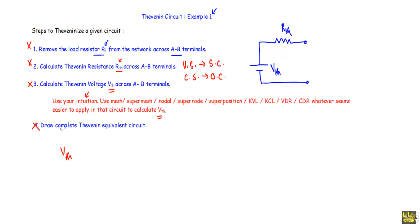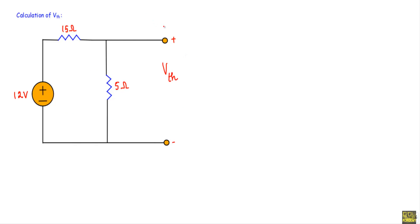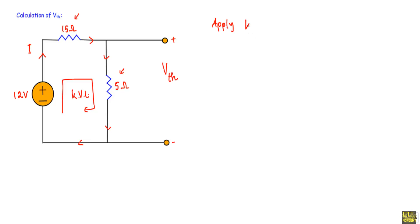In step four we draw the complete Thevenin equivalent circuit. I will now show additional methods to calculate Vth for the same circuit. The 15Ω and 5Ω resistors form a complete series loop, so I can apply KVL. The current i is the same throughout the series circuit, flowing from the positive terminal of the source. Applying Kirchhoff's Voltage Law: +12 − i×15 − i×5 = 0, giving i = 12/20 = 0.6A.